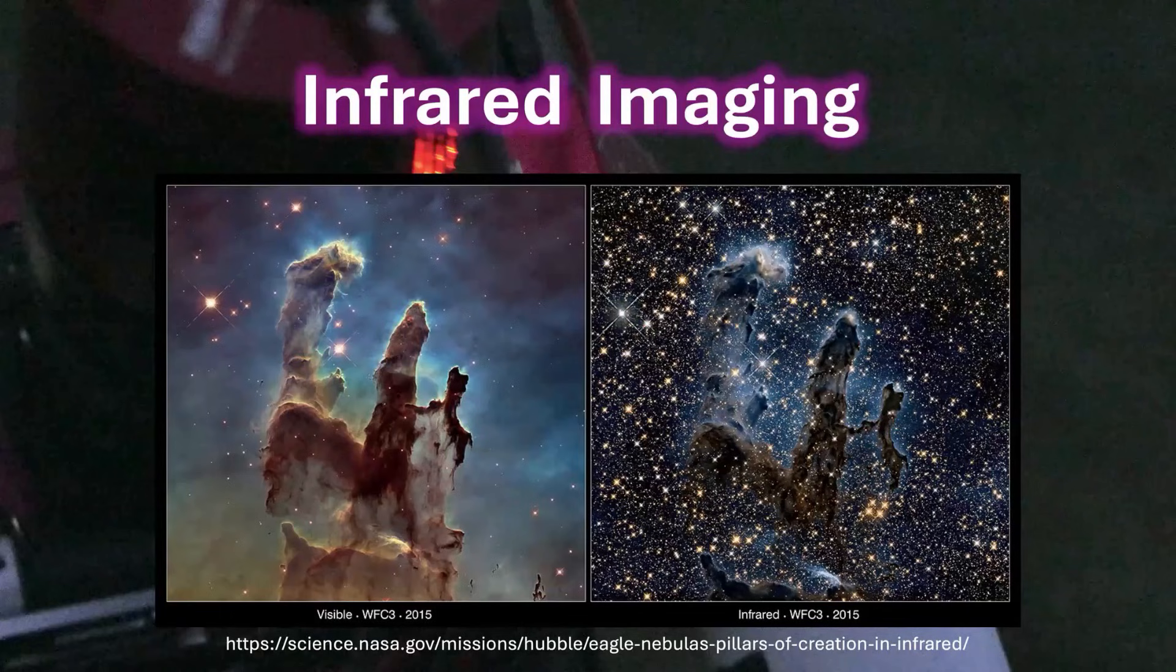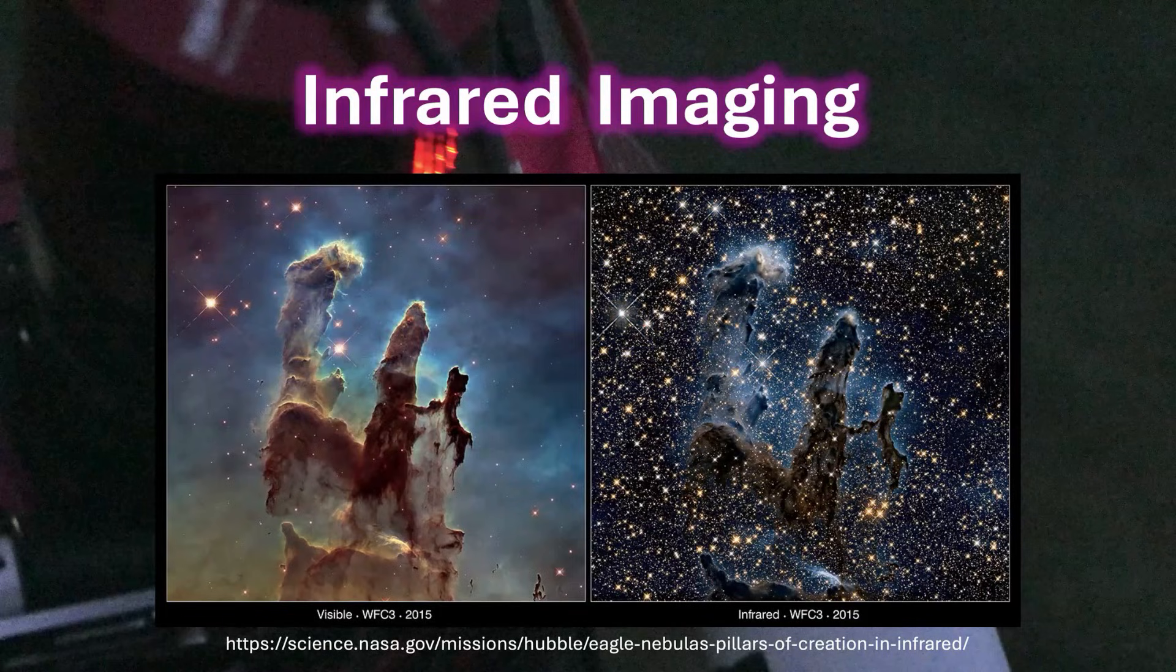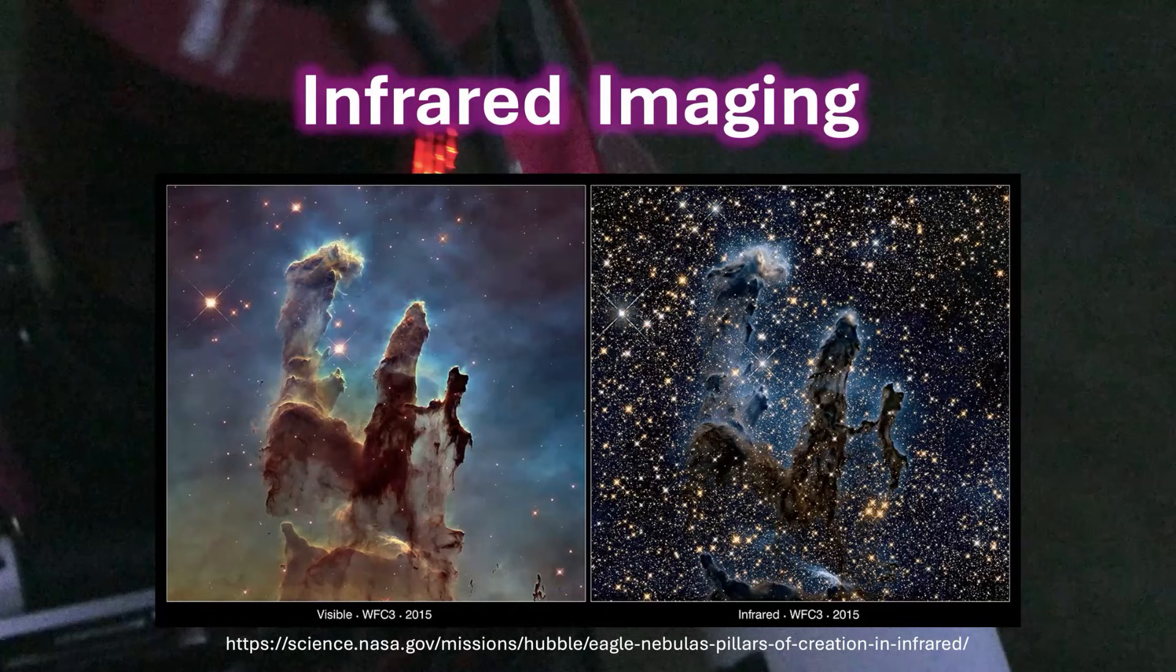Like these particular images of the Hubble Space Telescope on the right in infrared, which shows many more stars as compared to the visible radiation used on the left side. These are the famous examples of the Pillars of Creation in the Nebula.